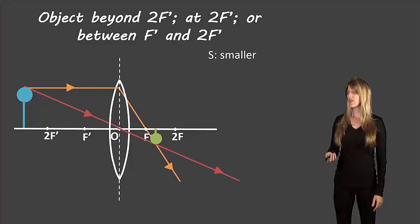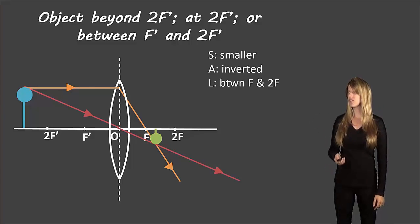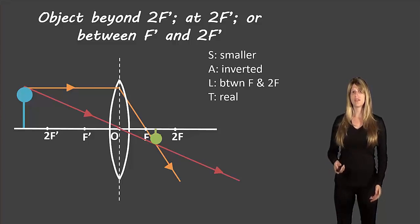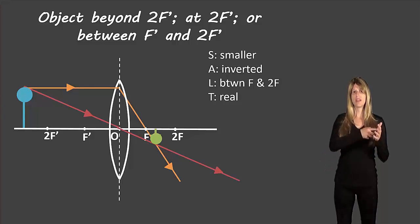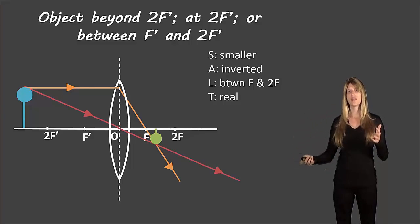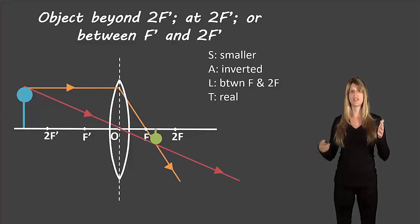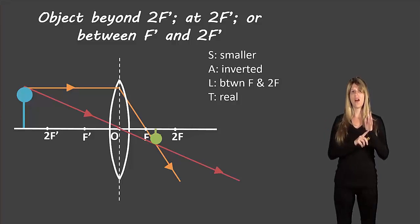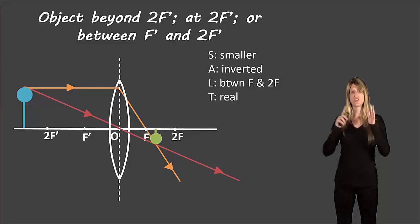If we're describing the image: the size is smaller, the attitude is inverted because they're facing in different directions, the location is between f and 2f, and the type is real. It's real because it's on the other side of the lens. Since lenses are transparent, light can actually move through the lens, so if the image ends up on the opposite side from the original object, that is real. If it were on the same side, it would be virtual, because light doesn't bounce off of a lens and come back like it would with a mirror.